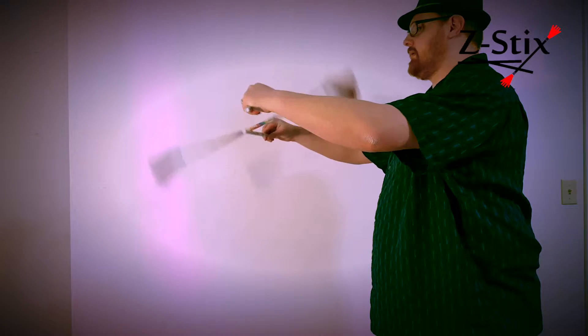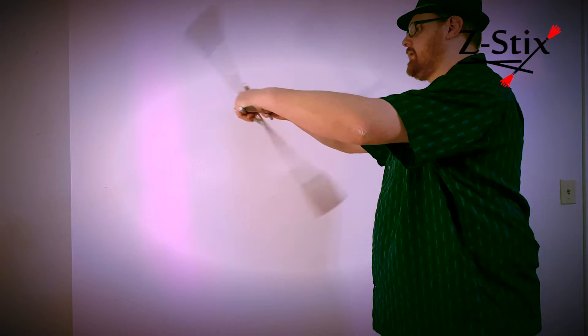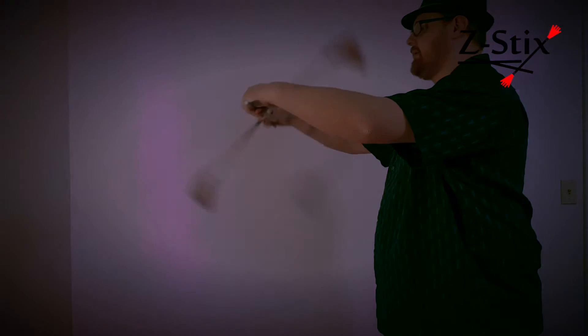When you're comfortable with that, try switching the direction of the spinning. You can do that by quickly catching the Z-Stick by bringing your hand stick towards the flower and pushing off in the opposite direction.